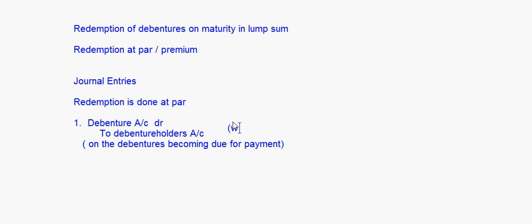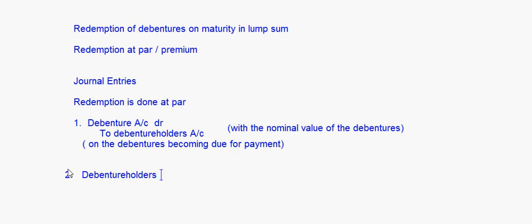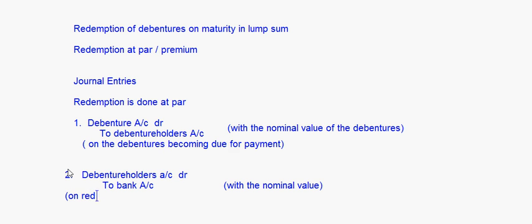This entry is with the nominal value of the debentures. Then, Debenture Holder Account debit to Bank Account — again with the nominal value, the amount paid to the debenture holders. This entry is made on redemption of debentures.